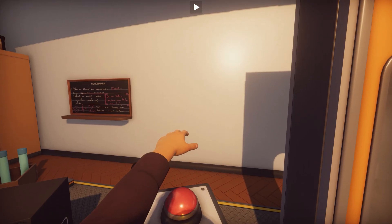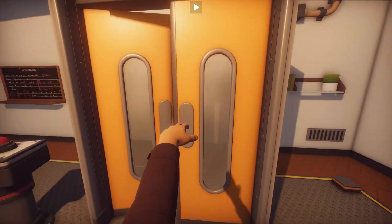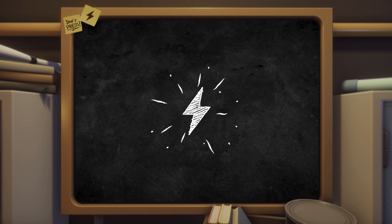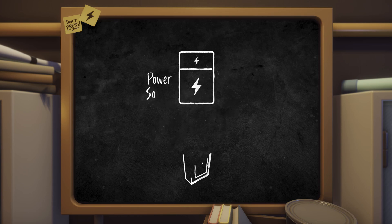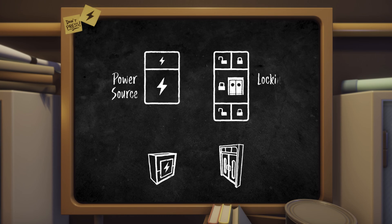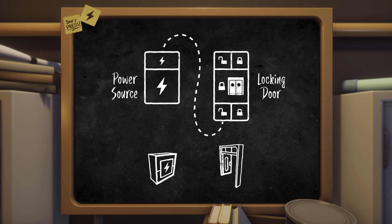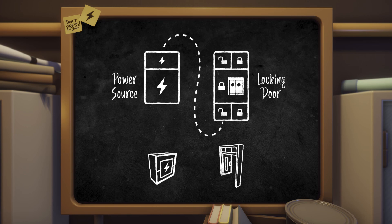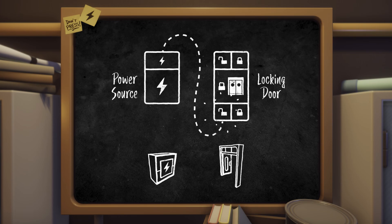I'll start each circuit video with a quick theory overview. All circuit props require power to function, and all power comes from a power source. In this video we're going to unlock a door. In circuit mode you can connect props together with wires which passes along the power. By default, locking doors are locked and cannot be opened unless they have power connected to their unlock input, seen here as the open padlock.